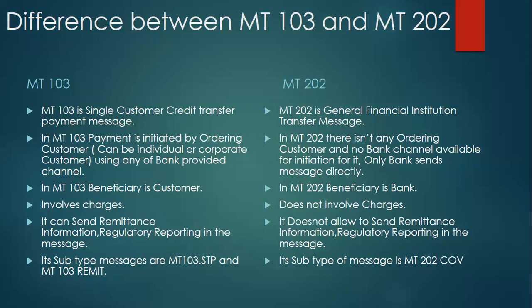In MT103, the beneficiary is the customer — it can be a corporate or a normal customer. In MT202, the beneficiary itself is a bank. In MT103, charges are involved: if you remember, there is tag 71A for the charge type, which can be BEN, SHA, or OUR, and tags 71F and 71C. MT202 does not have these fields, and therefore there are no charges in the MT202 messaging between two banks.